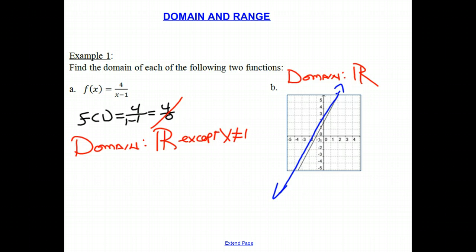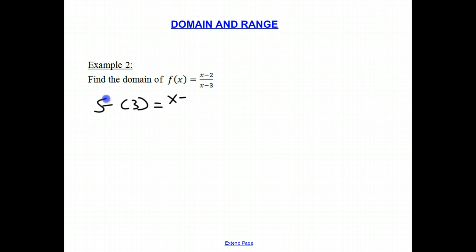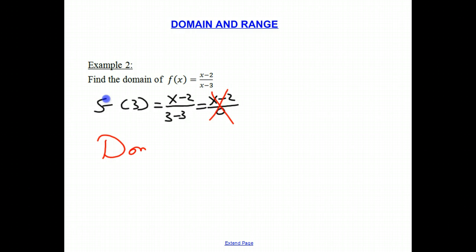Let's do another problem. Here we have f of x equals x minus 2 over x minus 3. You should notice that you cannot have a value of 3 in the denominator because that would give you 0 in the denominator. f of 3 would be x minus 2 over 3 minus 3, which is x minus 2 over 0 — which we cannot have. Therefore, the domain is all real numbers except x is not equal to 3.